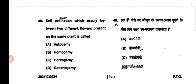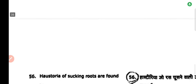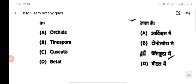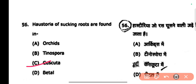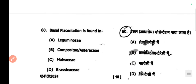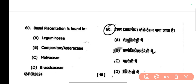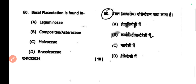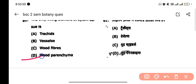Next question: self-pollination between two different flowers present on the same plant — the correct answer is geitonogamy. Next question: haustorial sucking roots are found in — the correct answer is Cuscuta. Next question: the only living element in xylem tissue is the wood parenchyma.